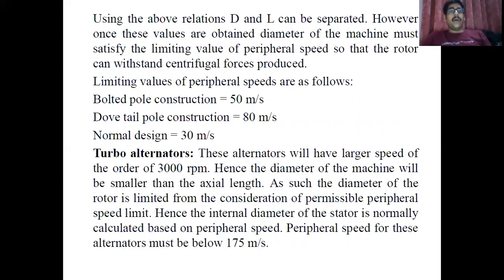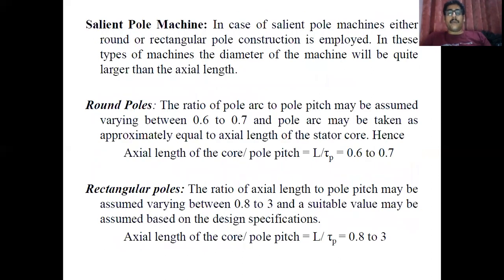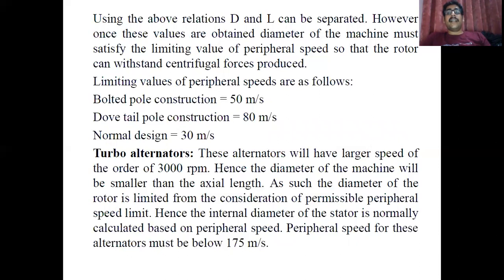Using the above relation, the diameter and stator core length are obtained. However, if in a numerical problem the peripheral speed is given, then separation of D and L cannot use the previous formula L/τp. Instead, you use the formula for peripheral speed, which has certain limiting values depending on machine type. For bolted pole construction, peripheral speed should not exceed 50 m/s; for dovetail pole, not greater than 80 m/s. In general, for a synchronous machine, peripheral speed should not exceed 30 m/s.